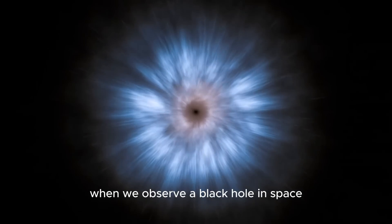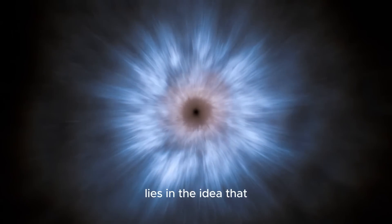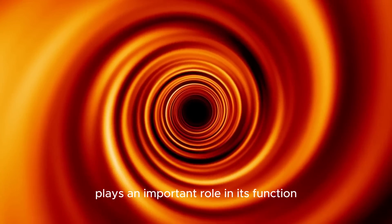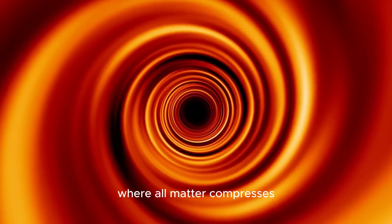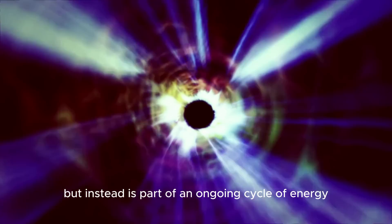This theory suggests that when we observe a black hole in space, it should be viewed as a hologram. The essence of this theory lies in the idea that the outer space around a black hole plays an important role in its function. It is not just a singular point where all matter compresses, but instead is part of an ongoing cycle of energy.